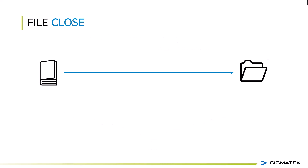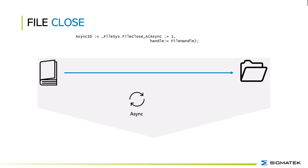The next operation is to close a file. This should be done asynchronously, and you must provide the file handle so that the system knows which file should be closed. As you may remember from file_write, the file handle is the reference between the system and the file.